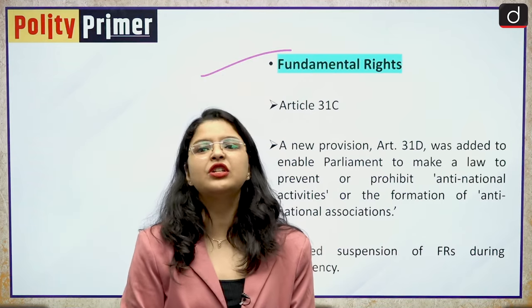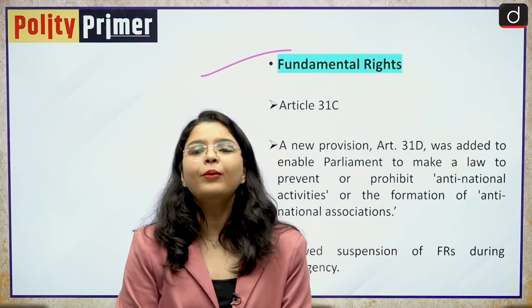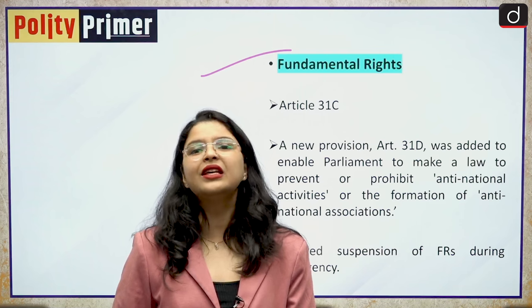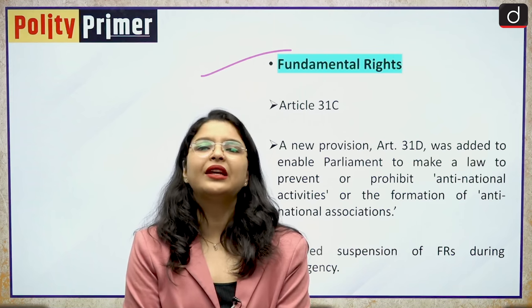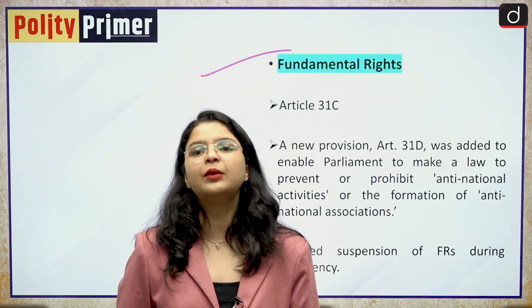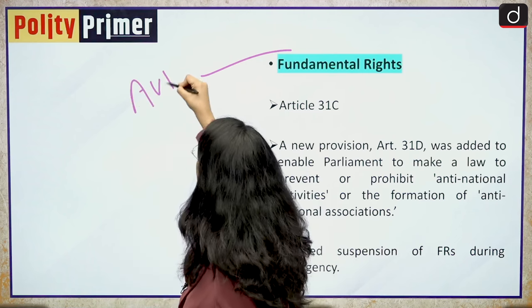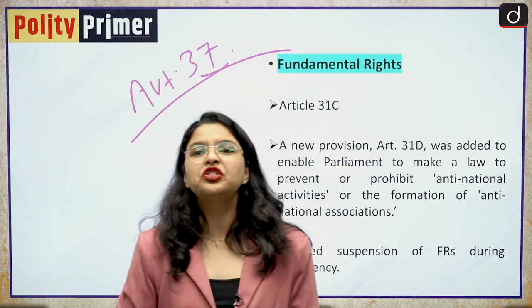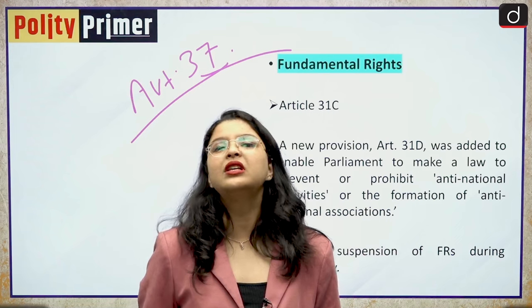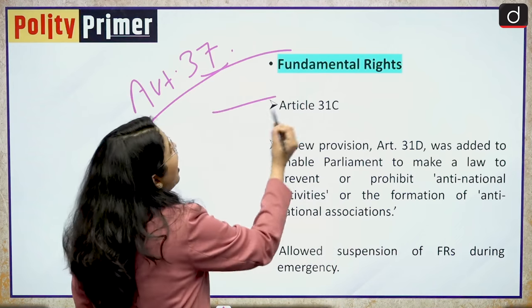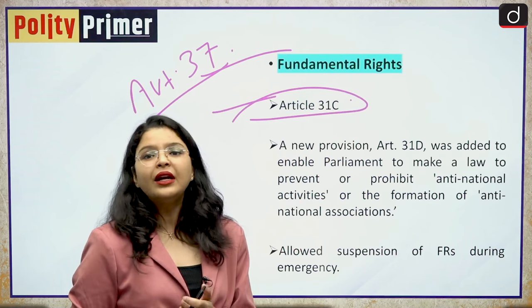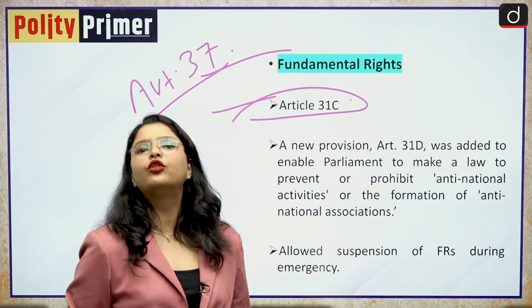Moving forward to fundamental rights. The government at that point of time was undertaking heavy social reforms, and they said that yes, we can amend and curtail the fundamental rights to promote public good and to promote the directive principles of state policy. But they were being debarred by Article 37, which explicitly mentions that the directive principles are non-justiciable in nature. So, to give DPSPs precedence over fundamental rights, Article 31 clause C was introduced, which explicitly said that in case of public good, the directive principles of state policy will prevail over the fundamental rights.